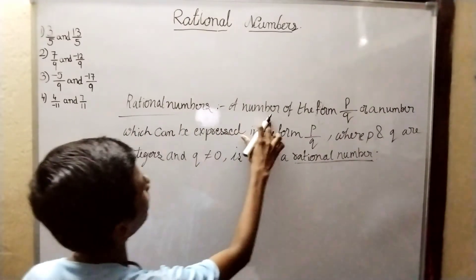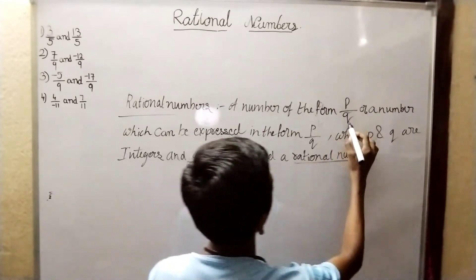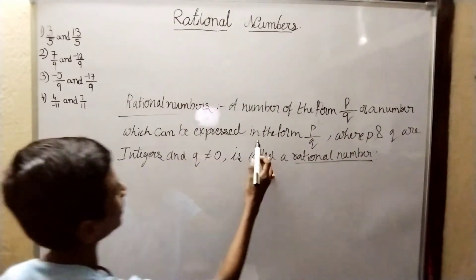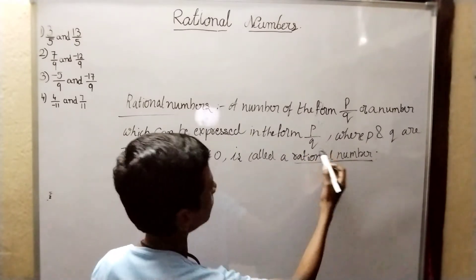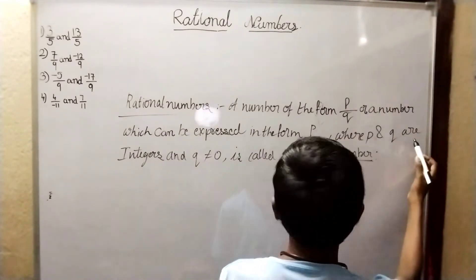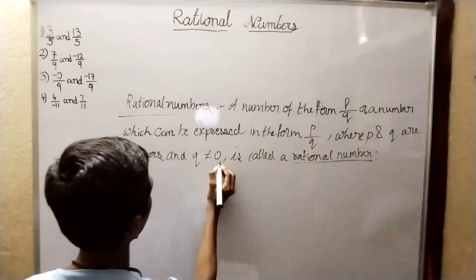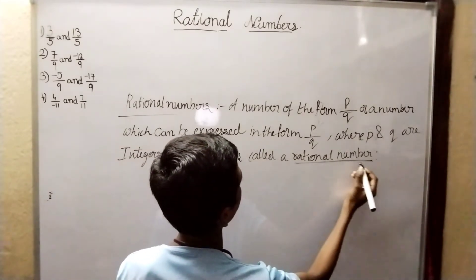Rational Numbers: a number of the form P by Q, or a number which can be expressed in the form of P by Q where P and Q are integers and Q is not equal to 0, is called a Rational Number.